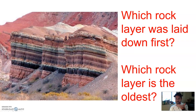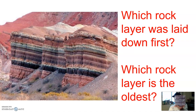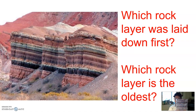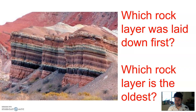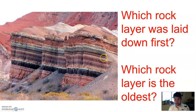So this layer of rock was laid down, and that one was laid down, and that one was laid down. Which one was laid down first? The one at the bottom. So which one of these is the oldest — which one has been here the longest? The one at the bottom.